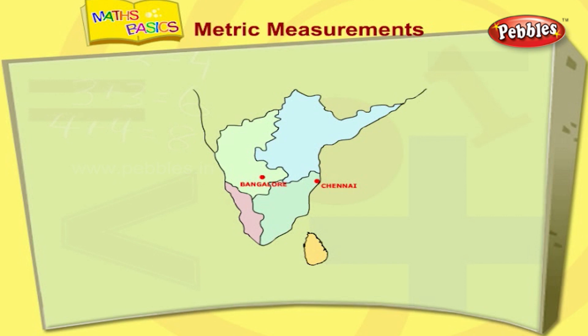We measure distance in kilometers. The short form for kilometer is km. We say distance between Chennai and Bangalore is 300 kilometers.